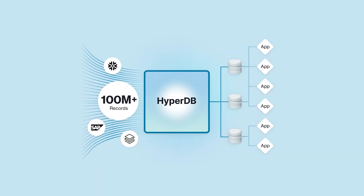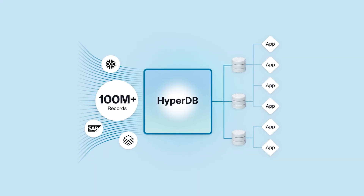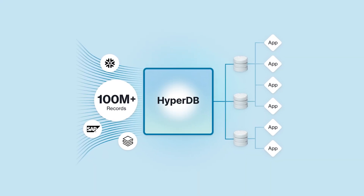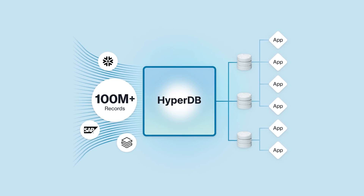Here's how it works. Instead of storing all the records directly in an Airtable base, you can store all your records in a standalone database in software like Snowflake or Databricks. These databases don't have any of the same record limitations as an Airtable base — you can store tens of millions of records in them.